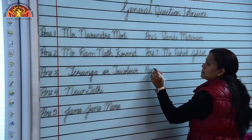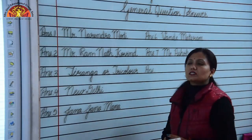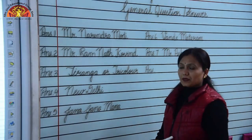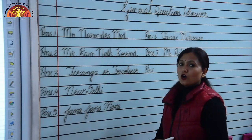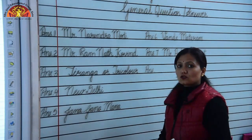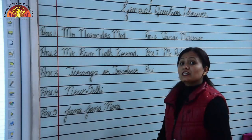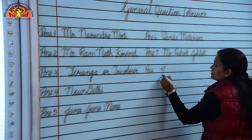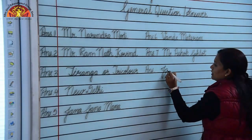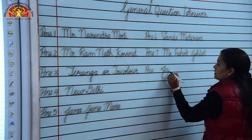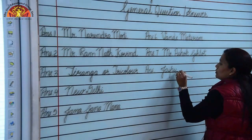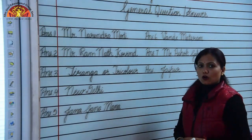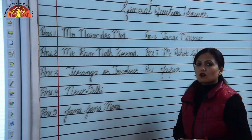Question 8: Which city is known as Pink City or Paris of India? Jaipur. Spelling: J-A-I-P-U-R. Jaipur is known as Pink City or Paris of India.